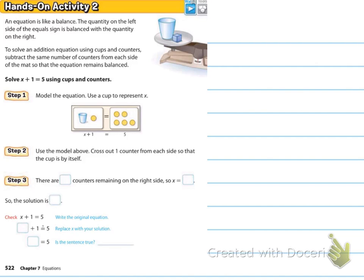Now the second activity that they're going to give us is an equation is like a balance. The quantity on the left side of the equal sign is balanced with the quantity on the right. To solve an addition equation using cups and counters, subtract the same number of counters from each side of the mat so that the equation remains balanced. So for example, just a mention, if we had 5 plus 5 equals 10, then we have a balanced situation here. So keep thinking of balance when we're doing these equations.